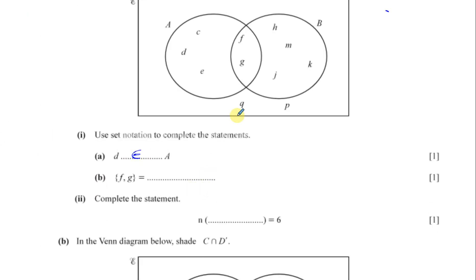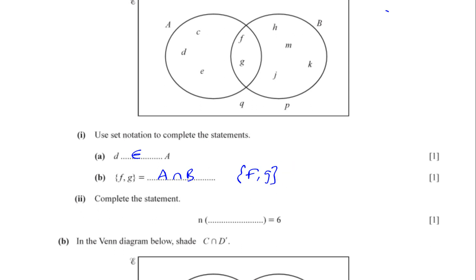F and G is basically the set which is the intersection between A and B — A intersection B. That's the set F and G. You could also say that the set {F, G} — these two elements — make a set, and you could say they are a true subset of set A, or a subset of set B. They're part of set A and part of set B as well.